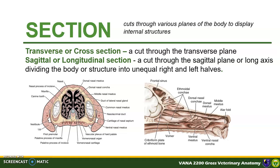A transverse or cross-section is a cut through the transverse plane. A sagittal or longitudinal section is a cut through the sagittal plane, or along the long axis, dividing the body or structure into unequal right and left halves. For example, the first image is a transverse or cross-section of the nasal cavity, while the second image shows a longitudinal section of the nasal cavity — both are the same structure but show different angles or views.